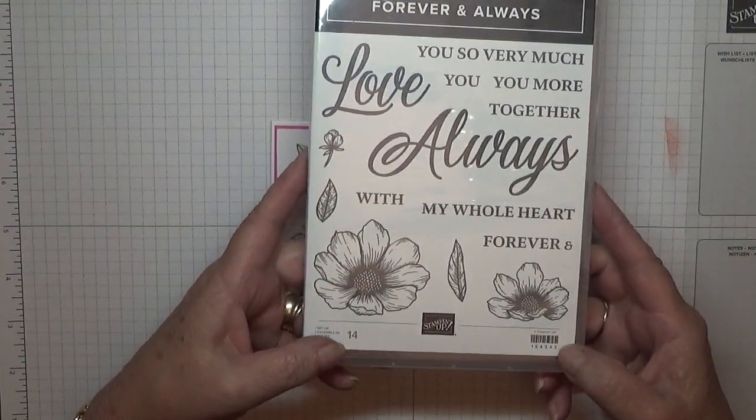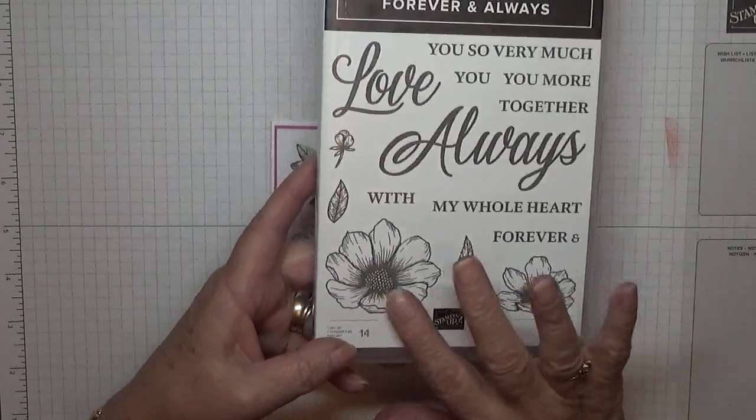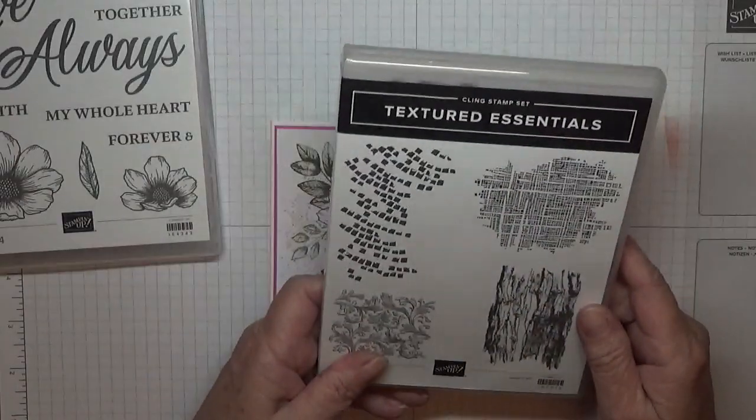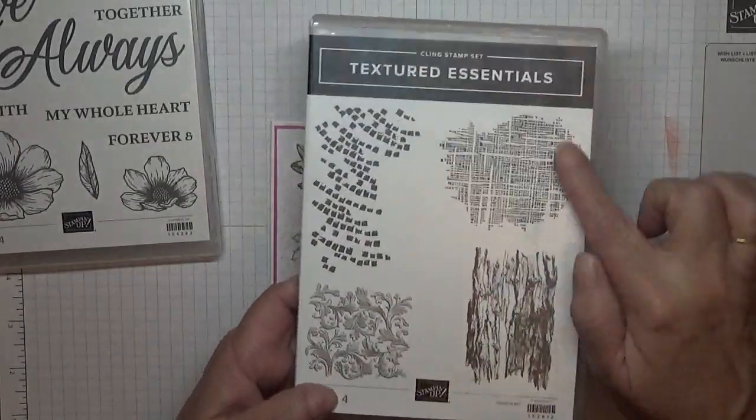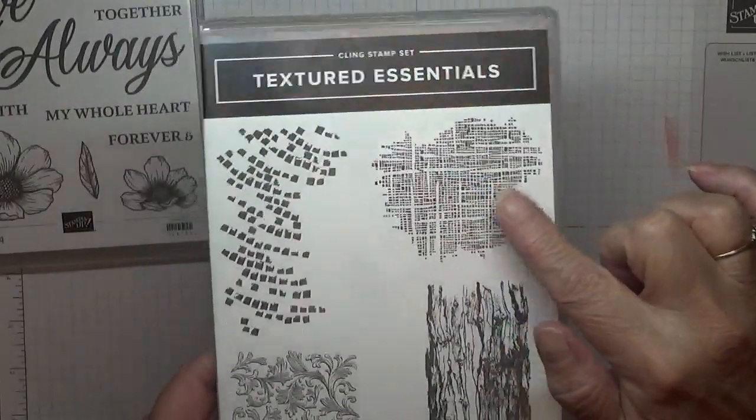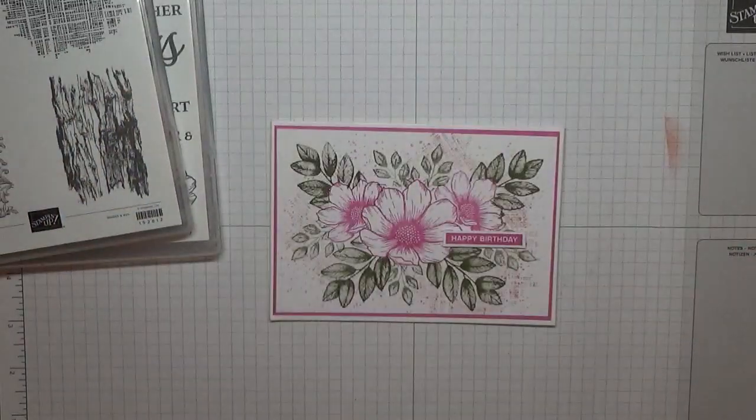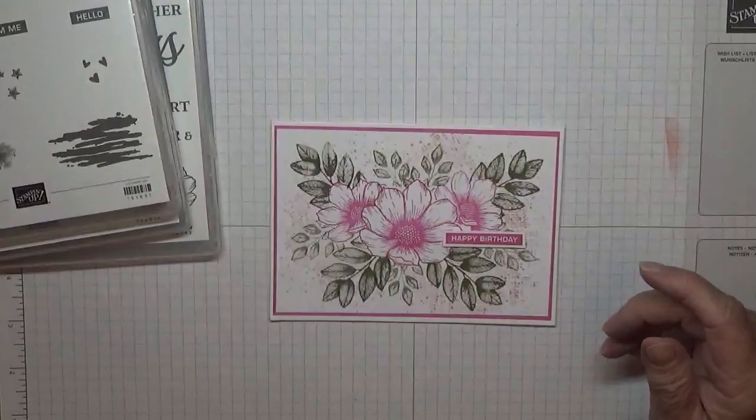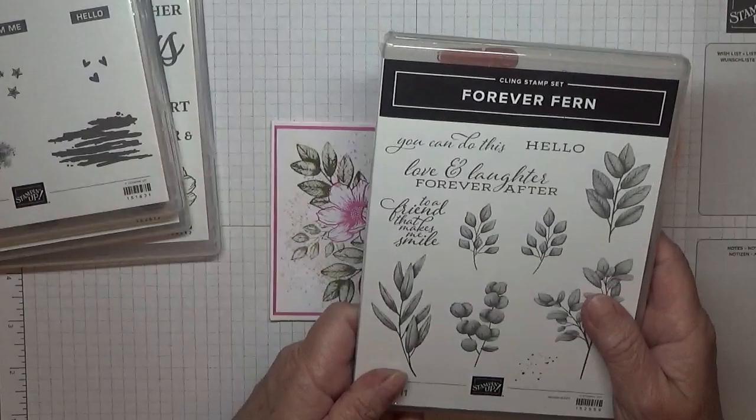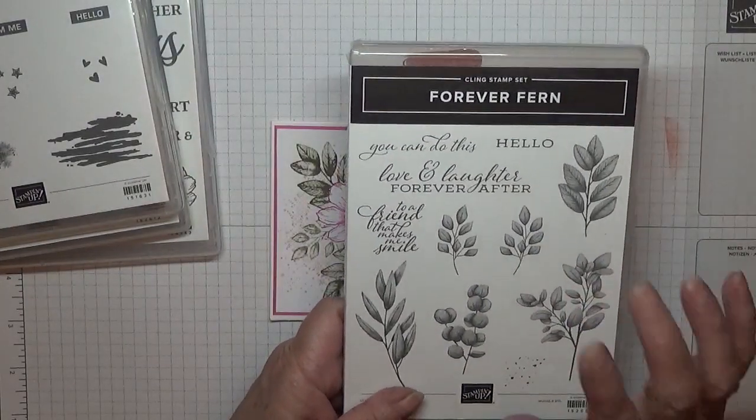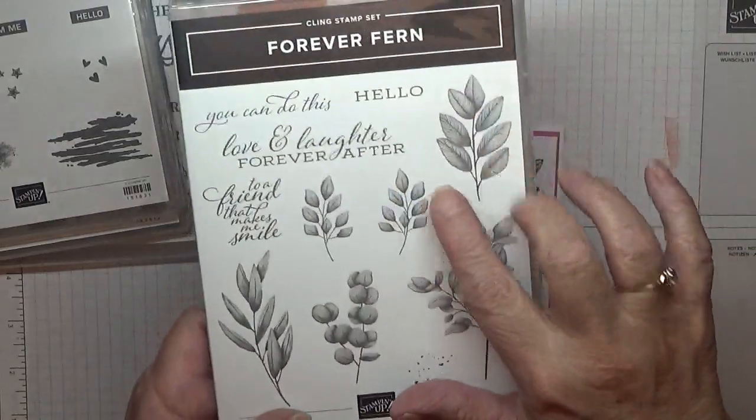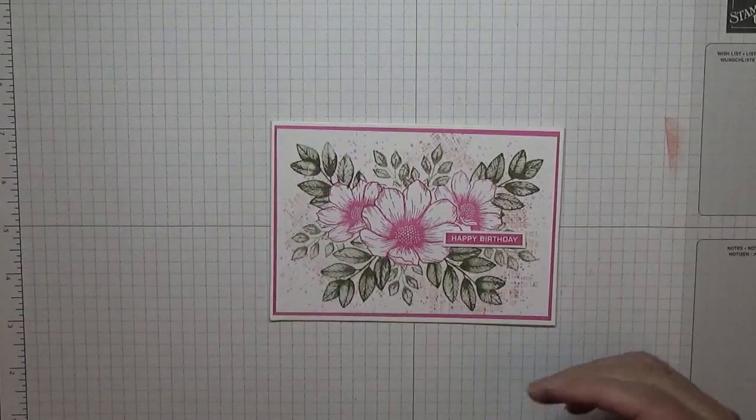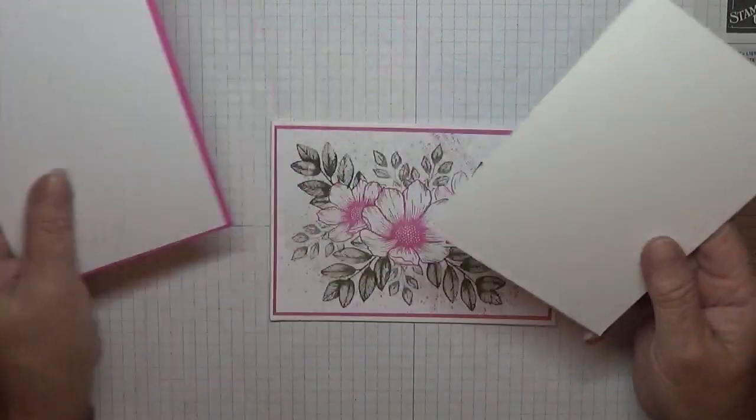Today I'll be using the two flowers. I'm also using Textured Essential and I'm going to be using that image there. I'm also using a retired set, Label Me Bold, just for the happy birthday, and I'm also using Forever Fern for a leaf, for the two leaves.